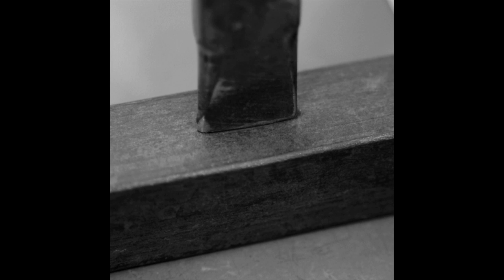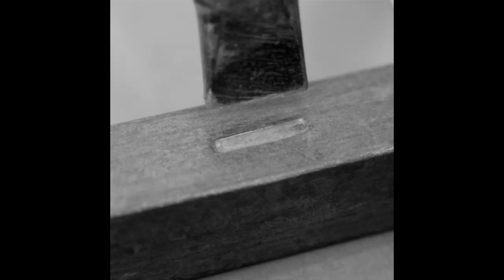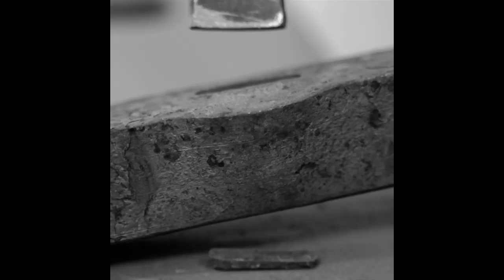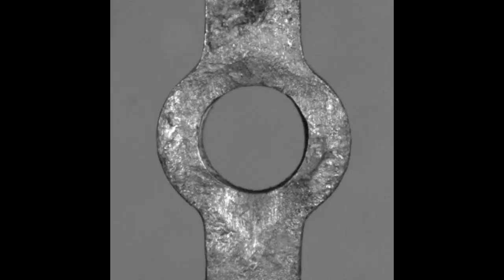The classic way for a blacksmith to punch a hole is to punch until they feel and hear the anvil, turn the bar over, find the bullseye, back punch, clean the slug, and then drift.